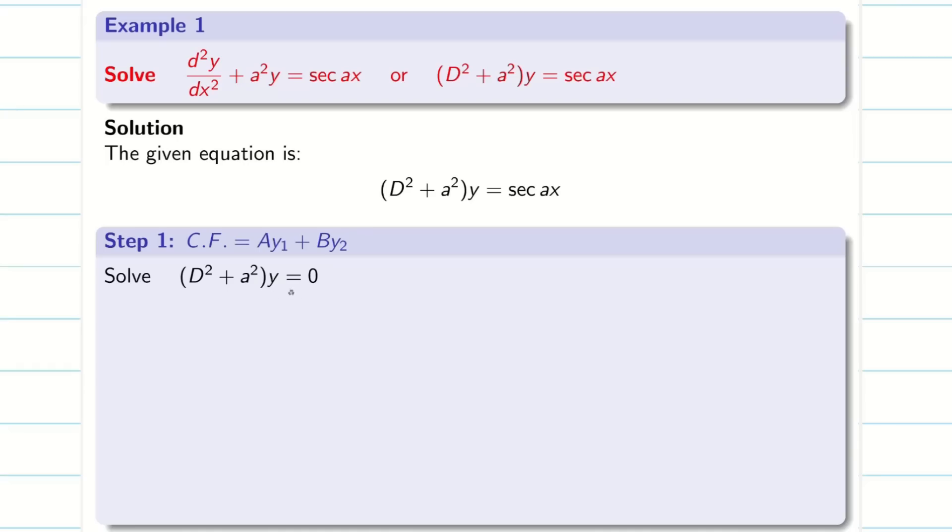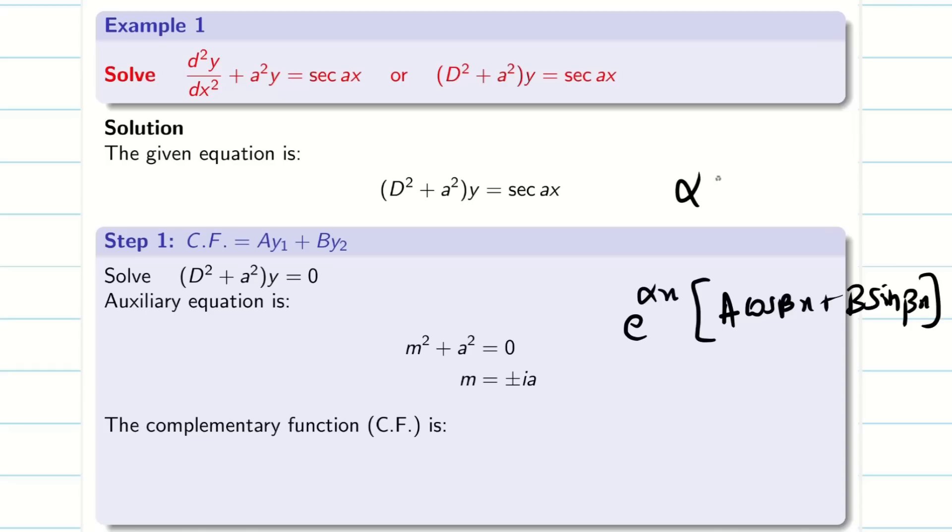We'll be getting d² + a² into y equal to 0. When you put d equal to m, we'll be getting the auxiliary equation m² + a² equal to 0. m² equal to minus a². When you take the square root, we'll be getting plus or minus i into a. For the negative value, I'll be getting this i. a² square root is a. Whenever you take square root, you write plus or minus ia. And we know my complementary function. It is going to be e^(αx) (A cos βx + B sin βx) if the roots are α plus or minus iβ.